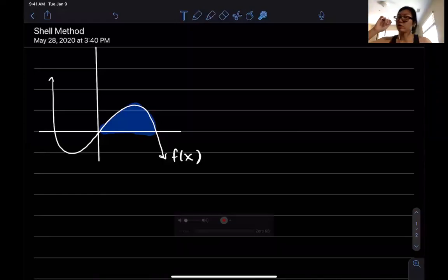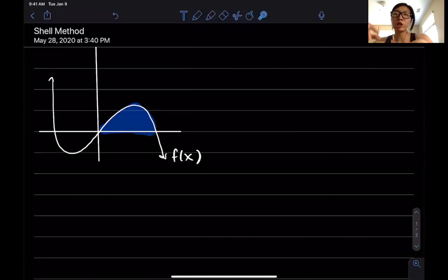Alright, hey guys, welcome back to another video. Today I'm talking about the shell method, which you're probably going to cover on Friday. Here's how it works. Let's say that we have this region in blue bounded by the graph of f of x.